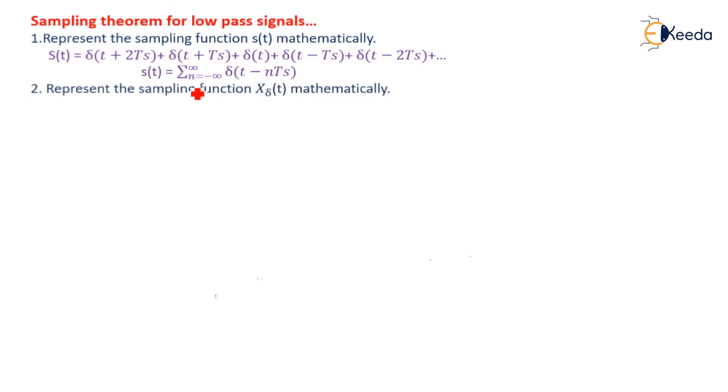The second step is represent the sampling function x_δ(t) mathematically. x_δ(t) can be represented as summation of n equal to minus infinity to infinity x(nTs) · δ(t - nTs).